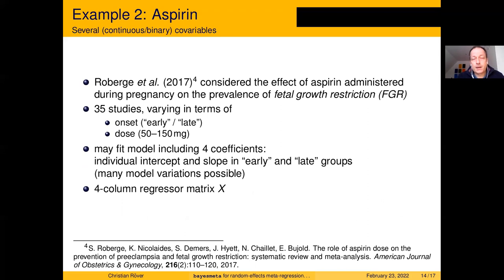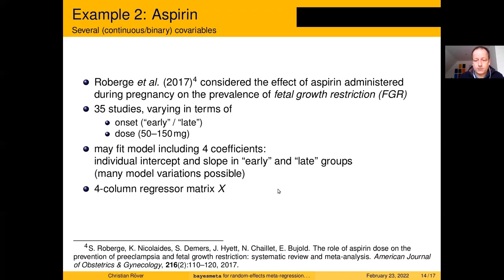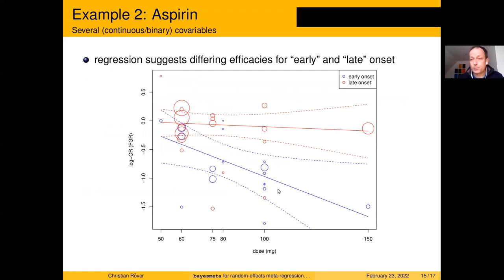So far we've only looked at binary co-variables. Here's a brief example also including continuous co-variables: a meta-analysis of 35 studies where each study used a different onset of medication and different dose. We can model this with four coefficients in a four-column regressor matrix. The output shows we can model continuous co-variables alongside binary ones — two groups plus a continuous dose variable. In one group there appears to be an effect of dose, while with a late onset we don't see a substantial effect of increasing or decreasing the dose.